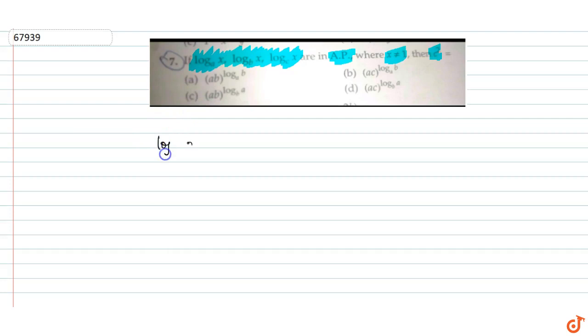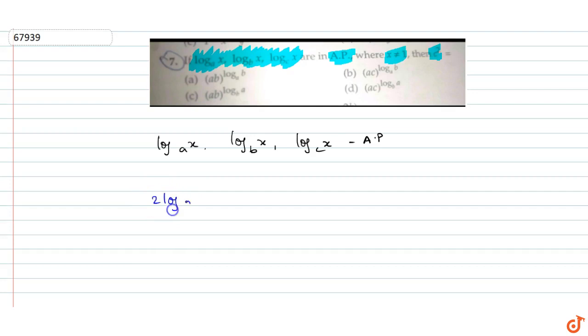We have given log x to the base A, log x to the base B, and log x to the base C are in AP. That means twice of log x to the base B is equal to log x to the base A plus log x to the base C.